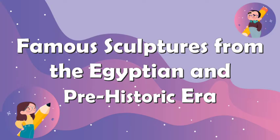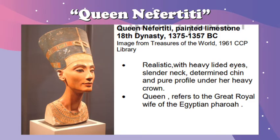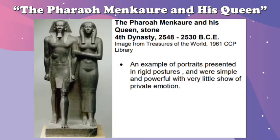Here are some examples of the sculptures made during the prehistoric and Egyptian art period. First is the sculpture of Queen Nefertiti, which is realistic with heavy-lidded eyes, slender neck, determined chin, and pure profile under her heavy crown. Queen refers to the great royal wife of the Egyptian pharaoh. Next is the sculpture of the pharaoh Menkaure and his queen using stone. This was made in the 4th dynasty, 2,548 to 2,530 BCE. This is an example of portraits presented in rigid postures, simple and powerful with very little show of private emotion.